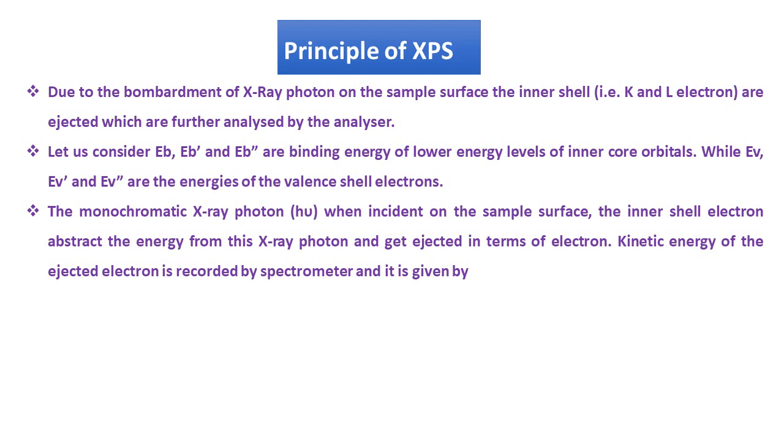Let us consider Eb, Eb prime and Eb double prime are binding energy of lower energy levels of inner core orbitals, while Ev, Ev prime and Ev double prime are the energies of valence shell electrons. The monochromatic X-ray photon, that is h nu, when incident on the sample surface, the inner shell electron abstracts the energy from this X-ray photon and gets ejected in terms of electron. Kinetic energy of the ejected electron is recorded by the spectrometer and it is given by the equation.